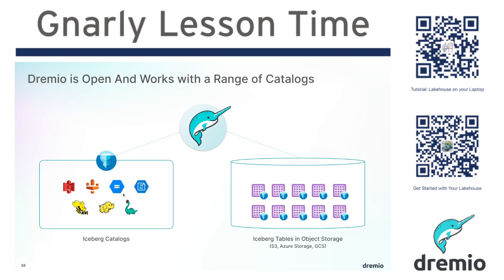Dremio is open and supports many catalogs beyond just its integrated catalog. You can connect external Nessie catalogs, Hadoop catalogs, and Hive catalogs. You can connect any type of object storage where you can house Apache Iceberg tables using the Hadoop catalog, and further catalog support is always on the way.